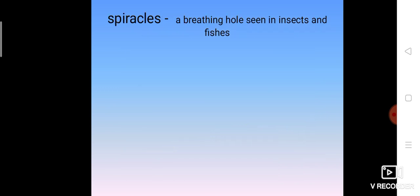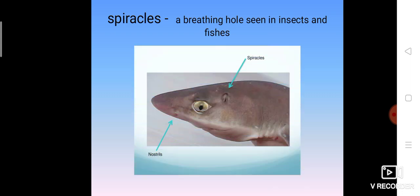The next word is spiracles. Spiracles, which means a breathing hole seen in insects and fishes. Through these spiracles the insects and fishes can respire.